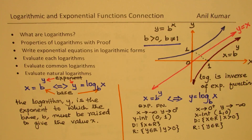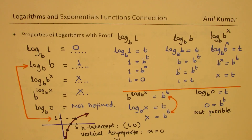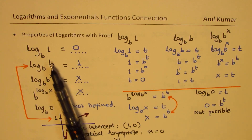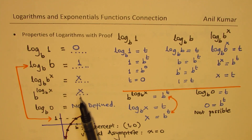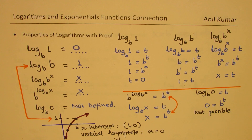We have seen that logarithms are the inverse of exponential functions. To solve exponential equations, we can use logarithms, and to solve logarithmic equations, we can use exponential functions. We also saw rules of logarithms with proof for each. Log b of 0 is not defined because exponential functions never give 0 — their values are always greater than 0.